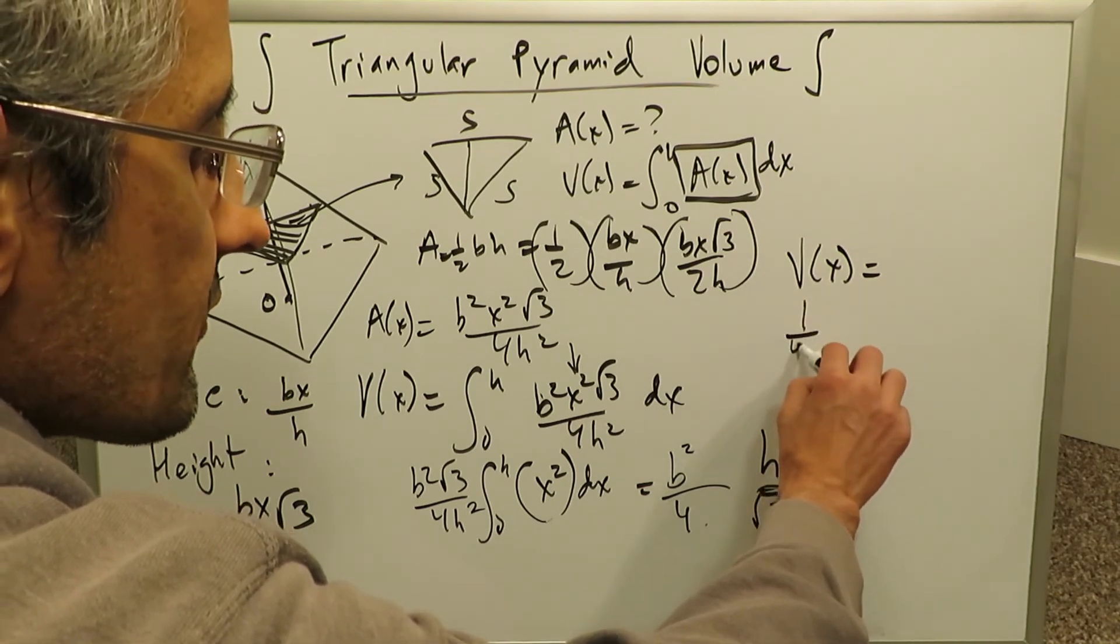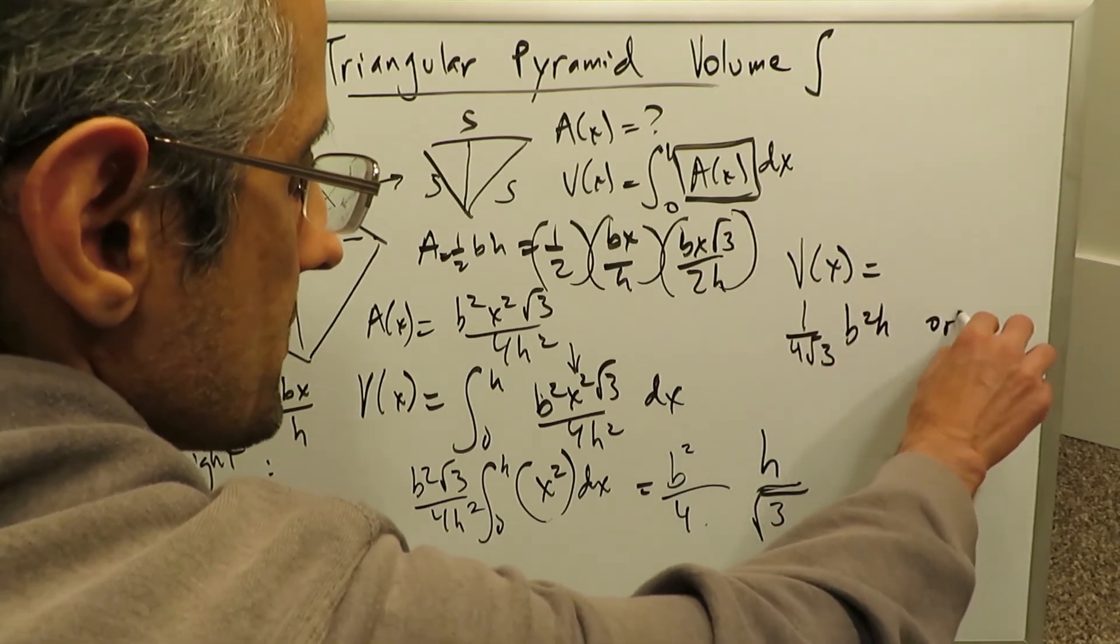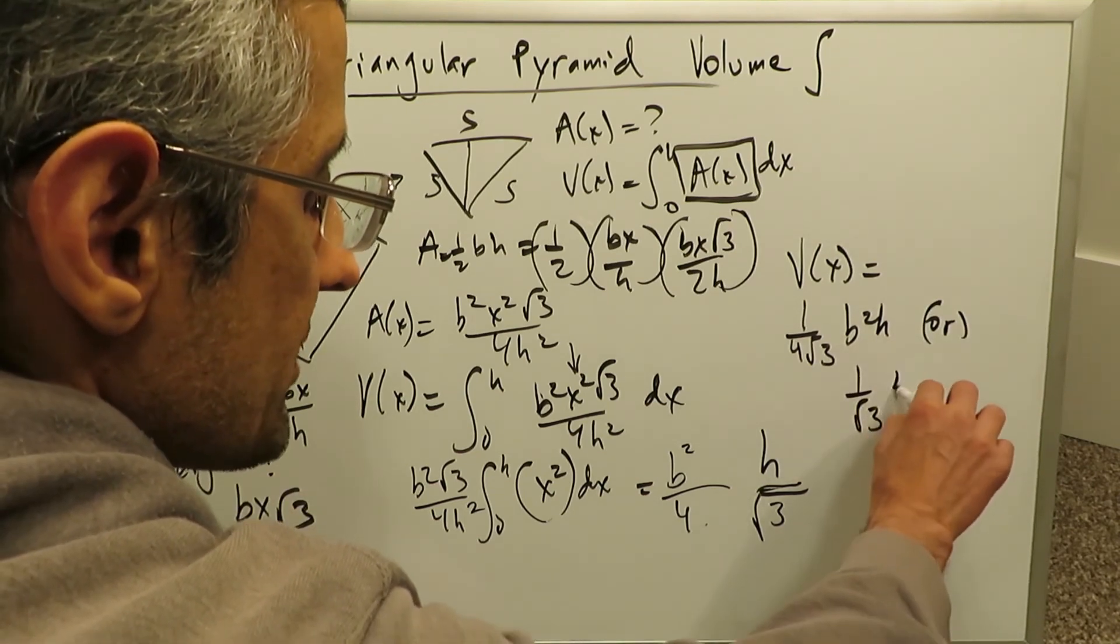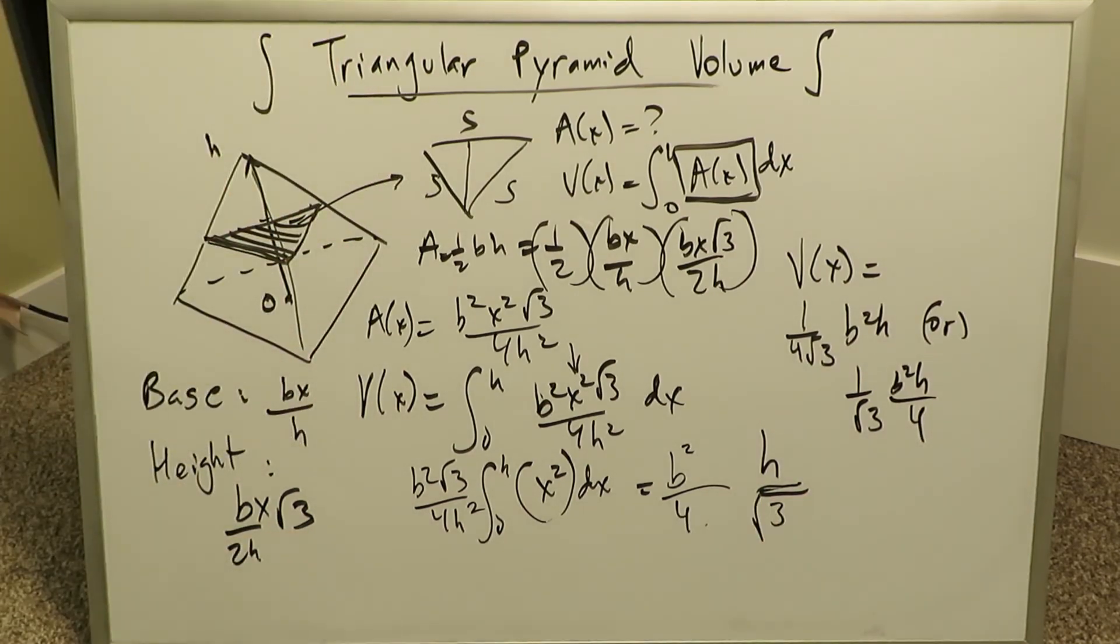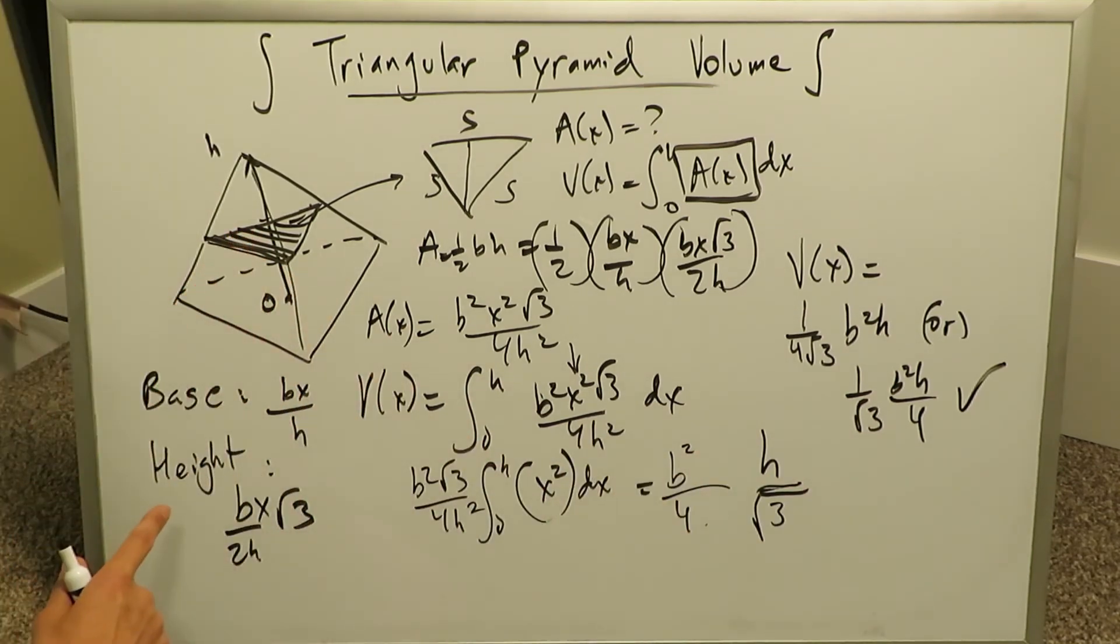You can write it in this good way. You can do 1 over 4 root 3 B squared H or you can say it's going to be 1 over root 3 B squared H over 4. All of these ways of writing it are fine and they're right. And this right here is my volume of this triangular pyramid. The volume formula has been determined.